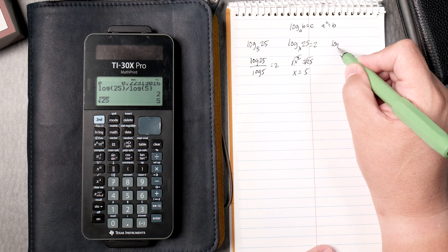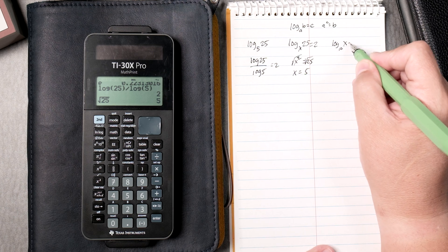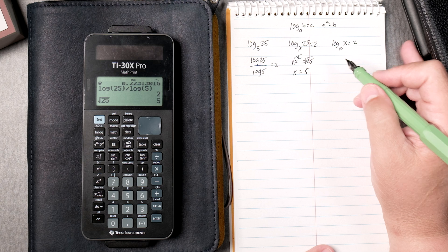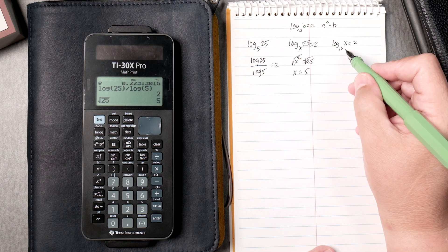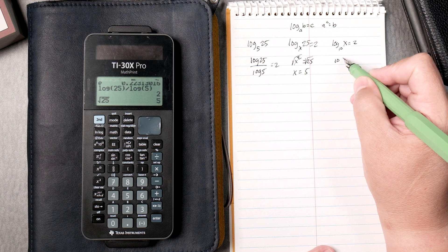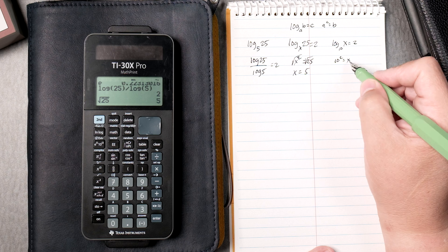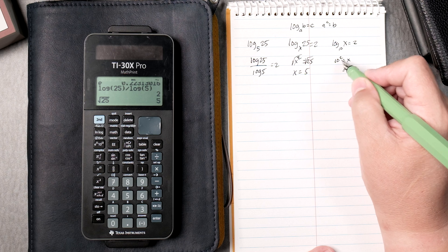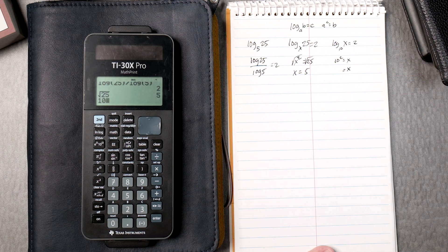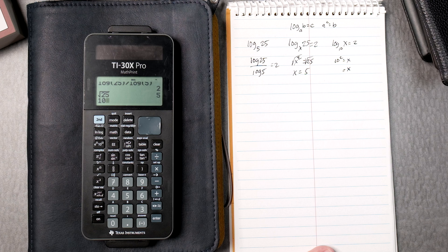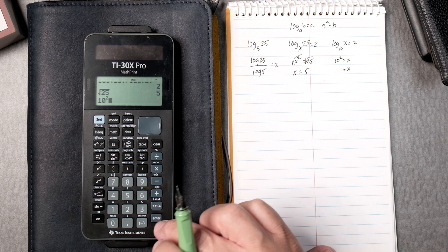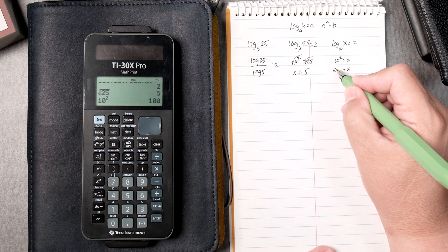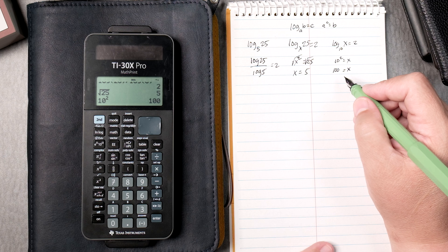Well, what about the log base 10 of x equals 2? Well, same thing. 10 squared equals x, and then x equals 10 squared. 10, right? And then squared, enter. It gives you 100. And I think we all knew the answer before.